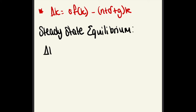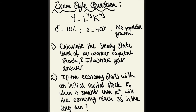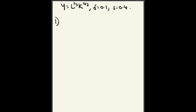An important thing to talk about is steady-state equilibrium. This is essentially when the country isn't growing or shrinking — when capital is unchanged, so the change in k equals 0. Set it equal to 0 and rearrange to get s·f(k) equals (n + delta + g)·k. Rather than overload you with all the theory, I'm going to go through a typical exam-style question based on the information we've covered so far, and then I can do a Part 2 for more content.